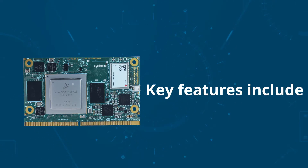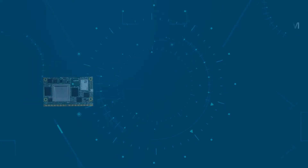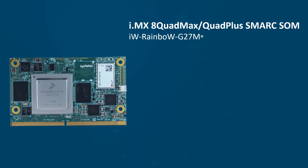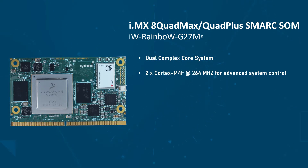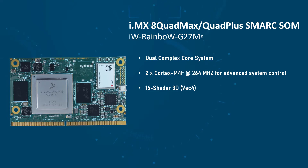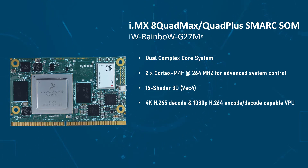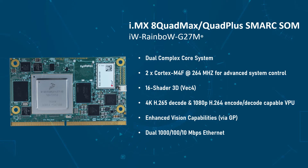Key features include dual-core Cortex-M4F at 264 MHz for advanced system control, 16-shader 3D, PEC4, 4K H.265 decode and 1080p H.264 encode, enhanced vision capabilities via GP, and dual 1110 Mbps Ethernet.